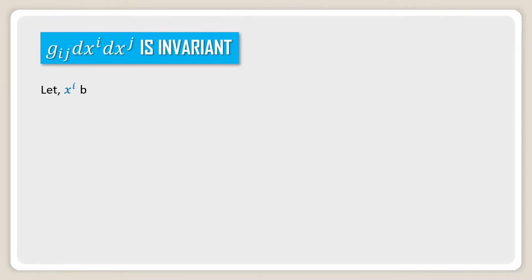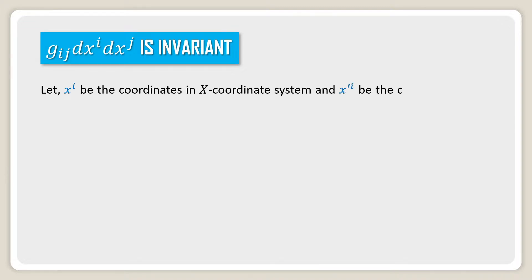g_ij dx^i dx^j is invariant. Let x^i be the coordinates in the x coordinate system and x'^i be the coordinates in the x' coordinate system.